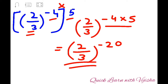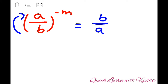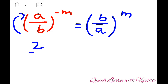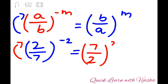Coming to the next law of indices: if a question is in the form (a/b) raised to (−m) and you are asked to convert it to positive form, you inverse the base — b comes up and a comes down — and the index becomes positive m. For example: (2/7) raised to (−2). To write it in positive indices, we inverse the fraction: 7 comes up and 2 comes down, giving (7/2) raised to 2. No minus sign is needed because we have inversed the fraction. This way you can solve all three practice sets.